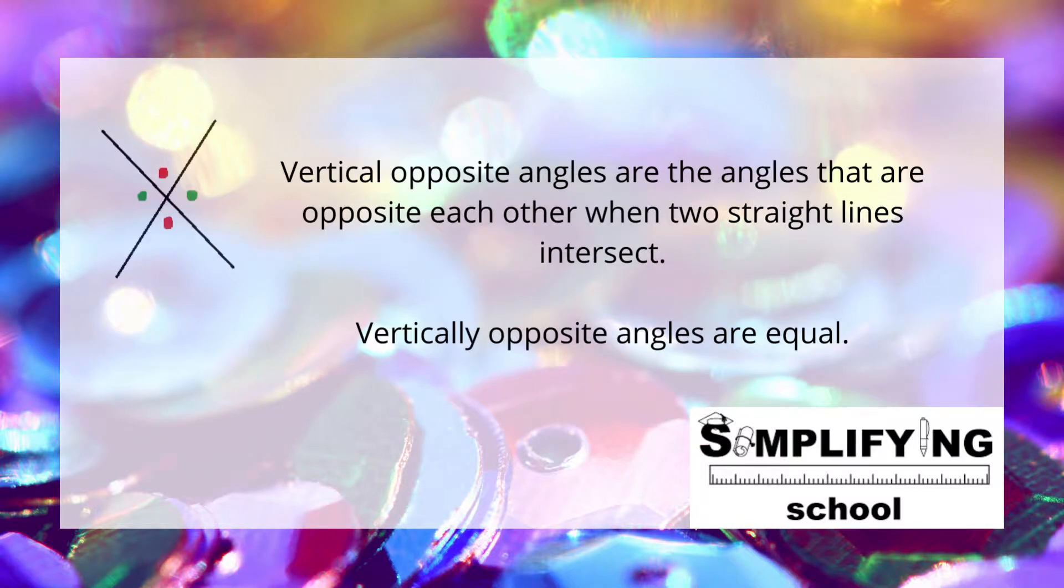And then the X. Here we have two straight lines crossing each other forming the X. Indicated on the drawing are two pairs of vertically opposite angles. Vertically opposite angles are equal.